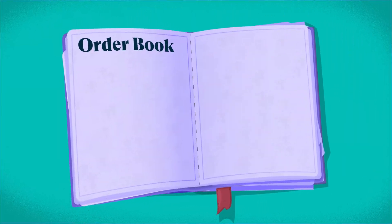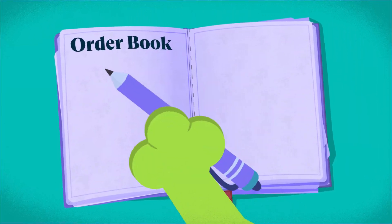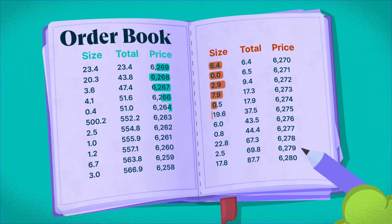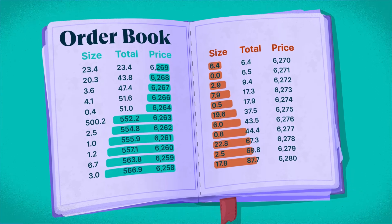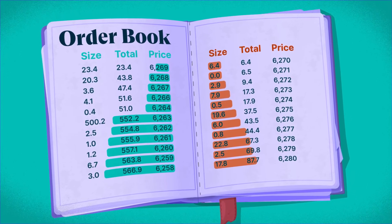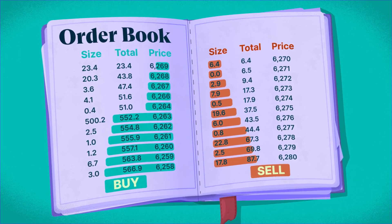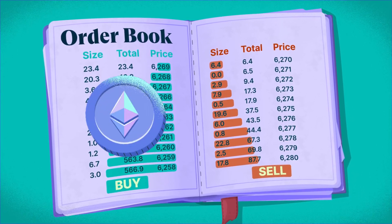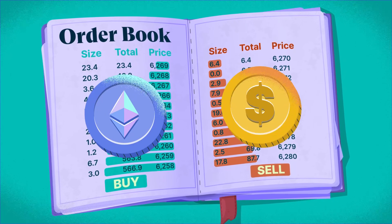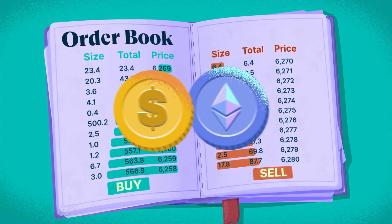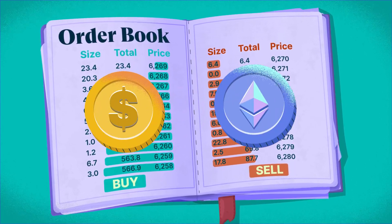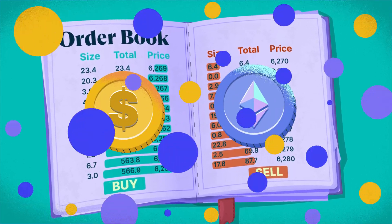An order book records limit orders where market participants specify desired prices for buying or selling assets. Trades occur when buy and sell orders match in price. Let's consider a scenario on an order book exchange.